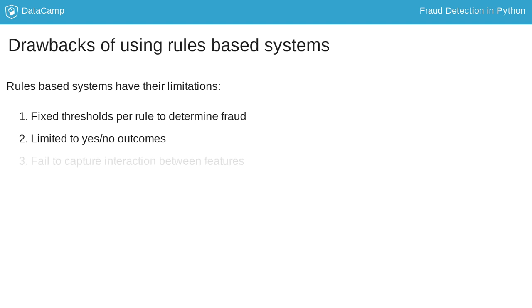Rules-based systems also cannot capture the interaction of features like machine learning models can. For example, suppose the size of a transaction only matters in combination with the frequency for determining fraudulent transactions — a rules-based system cannot really deal with that.